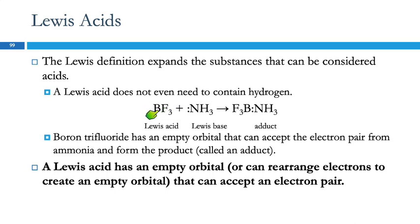So this BF3 has an empty orbital. This does not have an octet, the boron here. Remember boron and beryllium are the little guys, and they sometimes just have six electrons in their Lewis dot structures. So this has an empty orbital, and it can accommodate this lone pair. And so these two molecules come together. They're called an adduct.